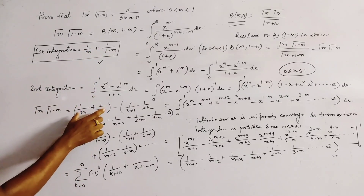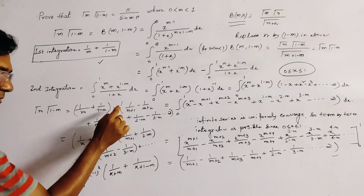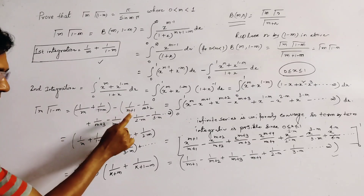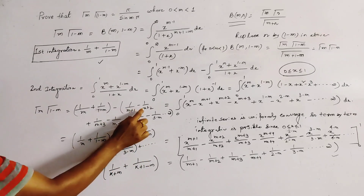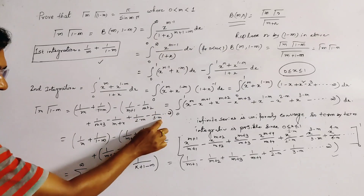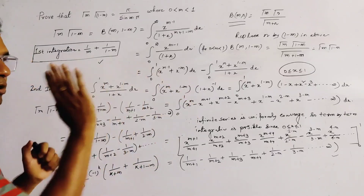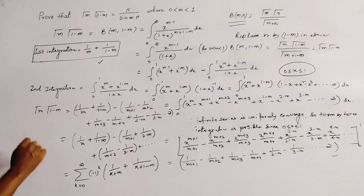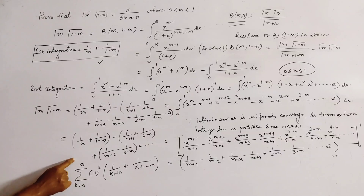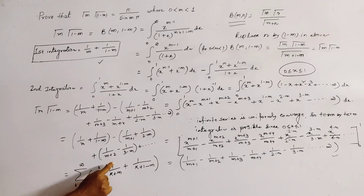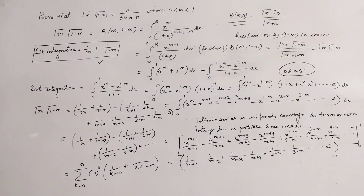We group the terms systematically: keeping the first integral bracket, then grouping 1/(m+1) with 1/(2-m), then 1/(m+2) with 1/(3-m), and so on. This gives the expression as a summation: Σ_{k=0}^∞ (-1)^k · [1/(k+m) + 1/(k+1-m)].